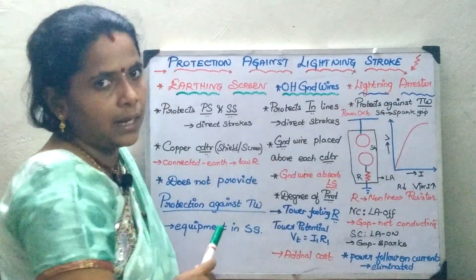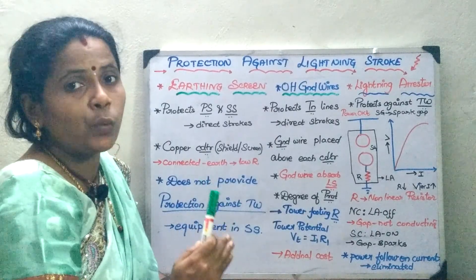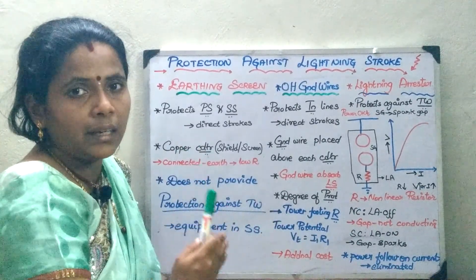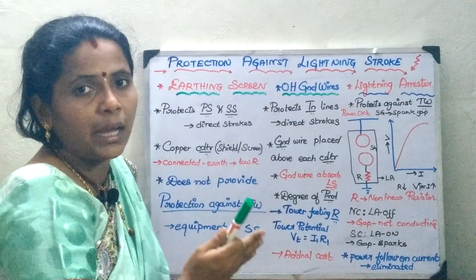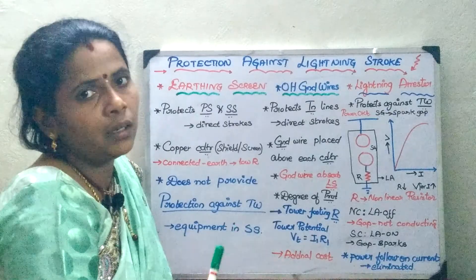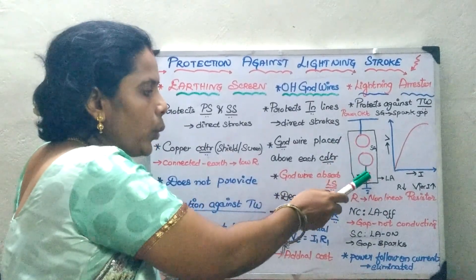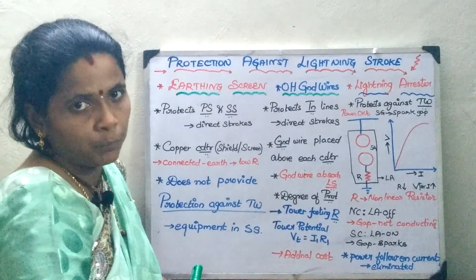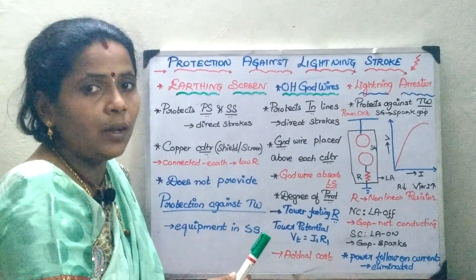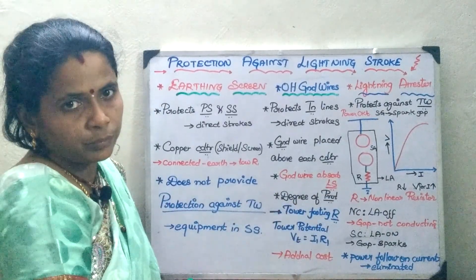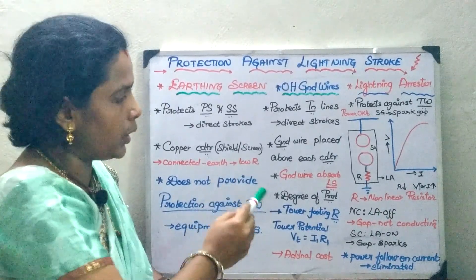Now we will see about the lightning arrester. The drawback we have seen in the previous two types is that they are not able to give protection against travelling waves or surges, which creates a harmful effect and damages your equipment. The lightning arrester bypasses this very high lightning discharge to the ground. The equipment consists of two components: one is your spark gap and you have a non-linear resistor setup. On one hand it is connected to the power circuitry to be protected, and on the other side it is grounded.